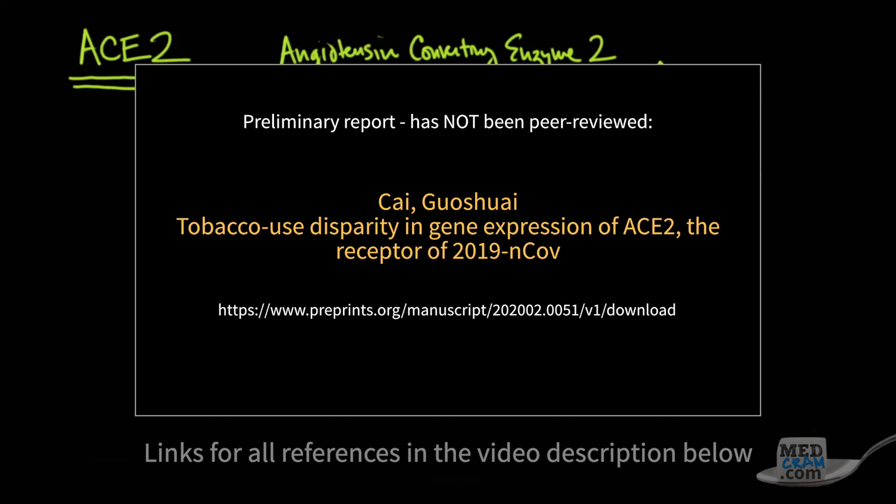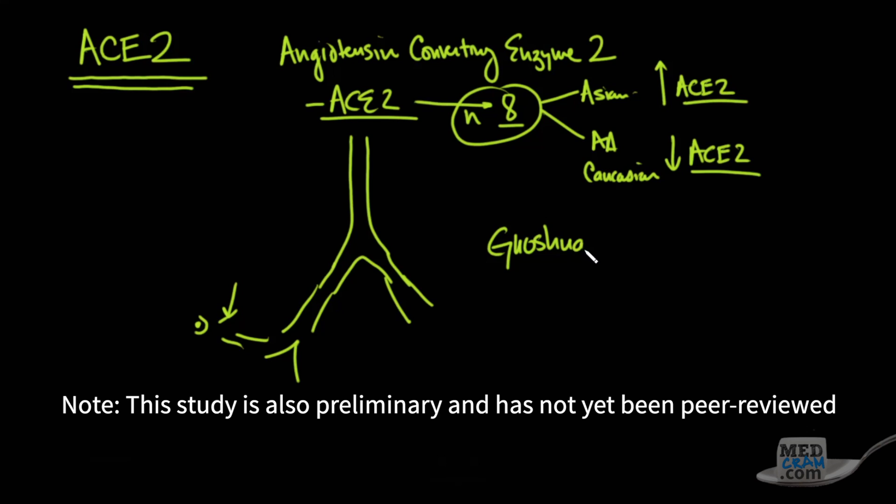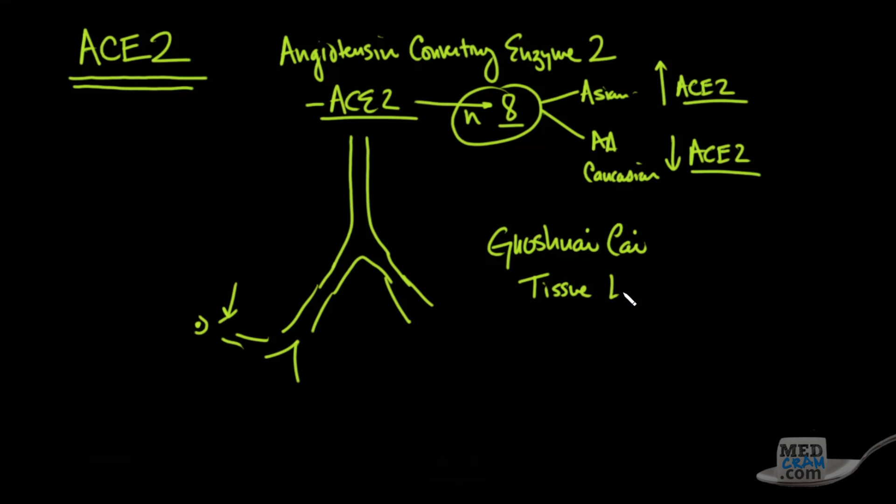So in this other study, which looked at the tissue of lung cancer patients, but obviously they were not looking at the cancer itself, but the normal tissue in the lung cancer patients. When they did a multivariate analysis, there was no racial differences. There was no gender differences in the expression of ACE2.